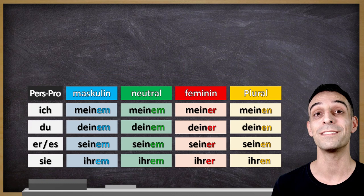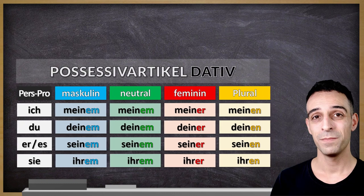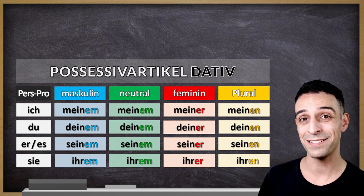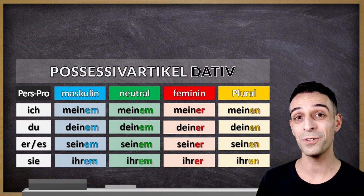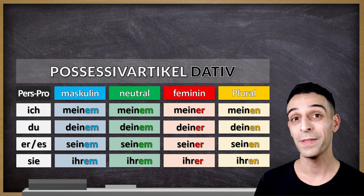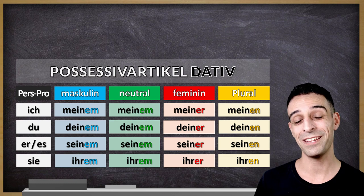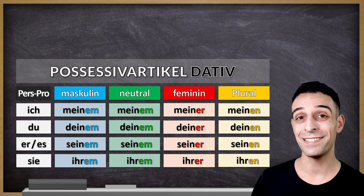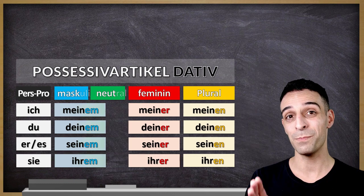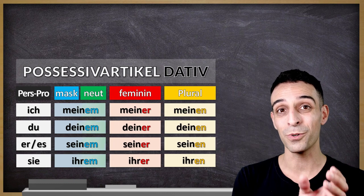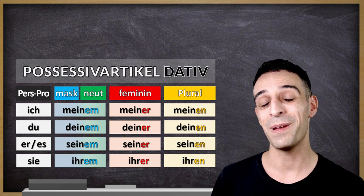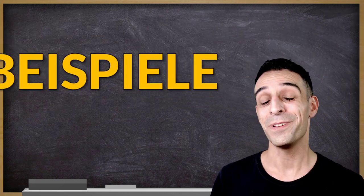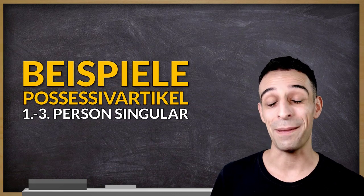You know the possessive articles in dative. Before I make more example sentences, I want to simplify this table a bit more. Masculine and neutral, they are actually the same, so we just merge those two columns. Makes it easier for you to memorize. And now we start with the examples.